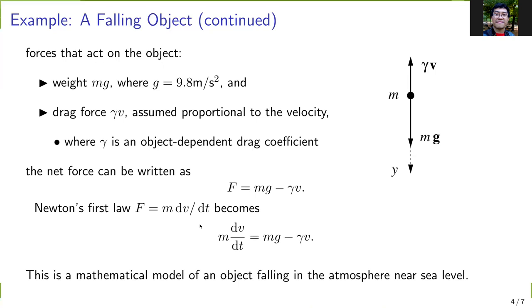The net force along the downward direction can be written as mg - γv. Newton's first law now becomes m dv/dt = mg - γv. This is a mathematical model of a falling object in the atmosphere near sea level.